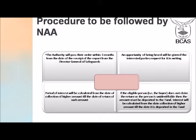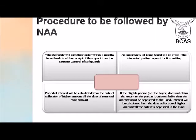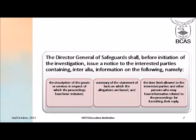Before issuance of the report, an opportunity is given to the interested parties and they are expected to give evidence as to whether or not they have actually passed on benefits, or if there is anything else they wish to present before the authority. If the eligible person — that is, the buyer — does not claim the return or the person is unidentifiable, then the amount has to be deposited by the supplier in a consolidated fund. Interest, if any, is calculated from the date of collection of the higher amount till the date of actual return of the amount. All this has to be done within a period of three months from the receipt of the report from the DG Safeguards.